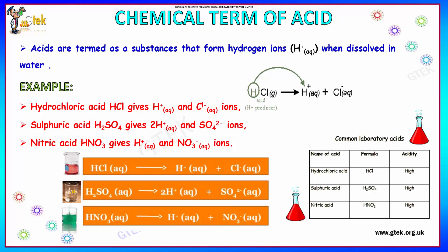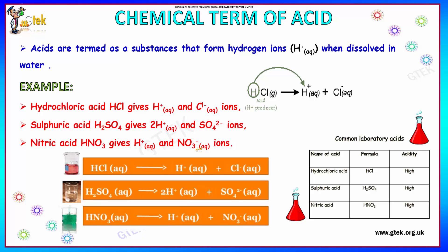Let's see some typical examples. Hydrochloric acid (HCl) will give H⁺ and Cl⁻ ions — hydrogen and chloride ions. Sulfuric acid will provide H⁺ ions and sulfate ions. Nitric acid will provide hydrogen and nitrate ions. So when an acid dissolves in water, it emits hydrogen ions.